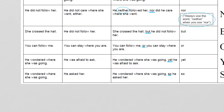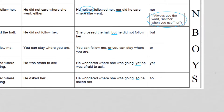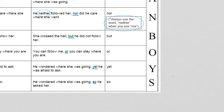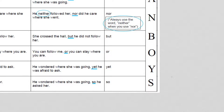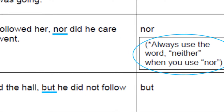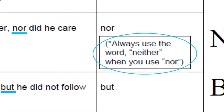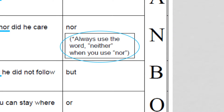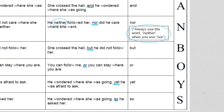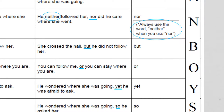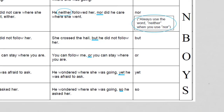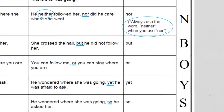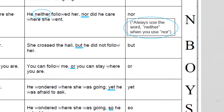Next example — this is pretty important because we're using 'nor.' 'He did not follow her' and 'He did not care where she went either.' Nor is special because when you use 'nor,' you always use the word 'neither,' and 'neither' always comes first. We don't use 'neither/nor' very often anymore, but it's good to know: 'He neither followed her, nor did he care where she went.'